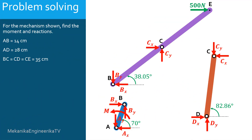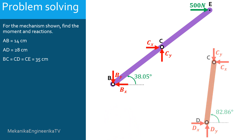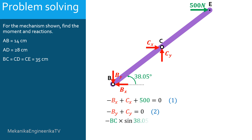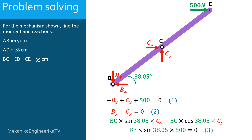The next step is to write the equilibrium equations of each bar. Starting with bar BCE: equilibrium of forces along the horizontal direction gives: minus BX plus CX plus 500 equals 0 — equation 1. Equilibrium of forces along the vertical direction gives: minus BY plus CY equals 0 — equation 2. Equilibrium of moments around point B, with counterclockwise positive, gives: minus BC·sin(38.05)·CX plus BC·cos(38.05)·CY minus BE·sin(38.05)·500 equals 0 — equation 3.